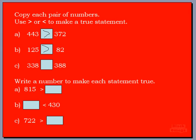One more to go — 338 and 388. They both have three hundreds. Let's look at our tens: the number on the left has three tens and the number on the right has eight tens. So boys and girls, which sign are we going to use? 338 is less than 388 — that's right! Because 388 has eight tens.